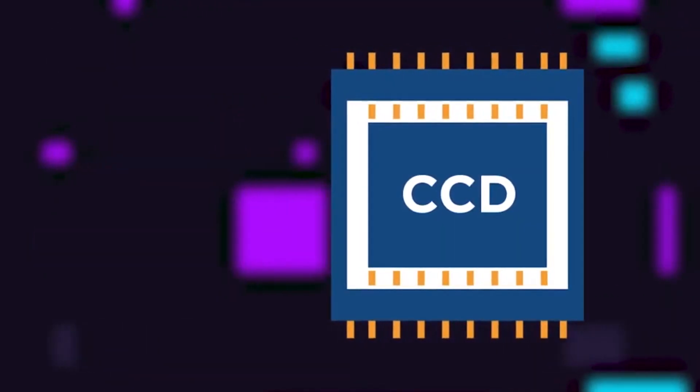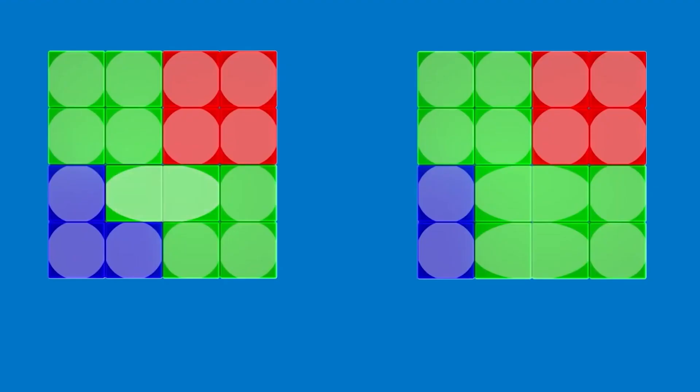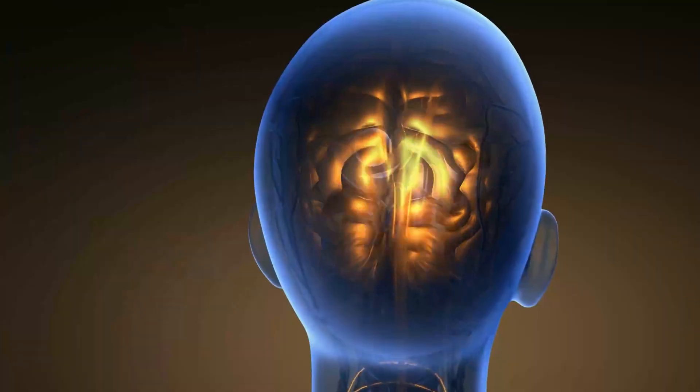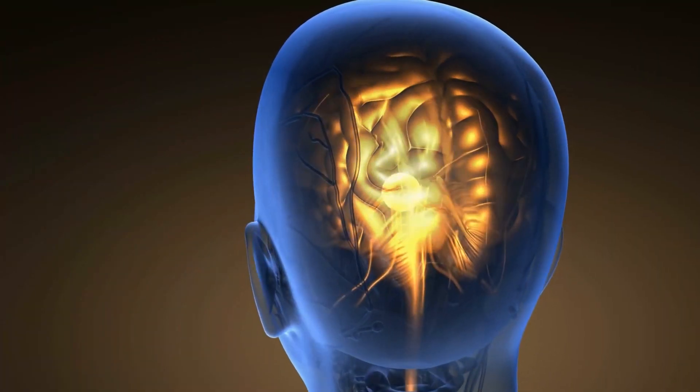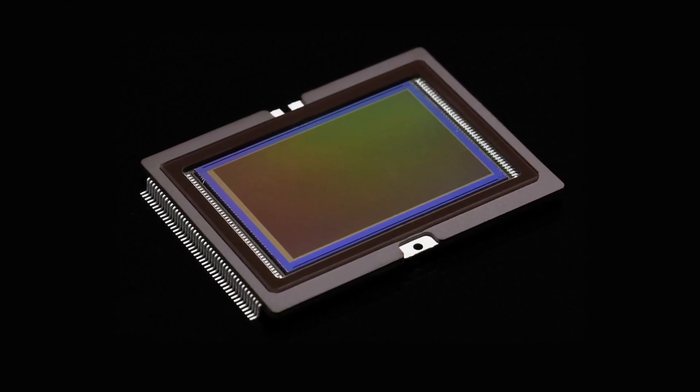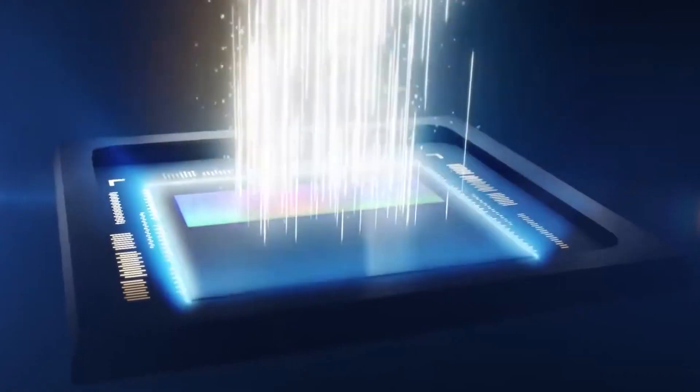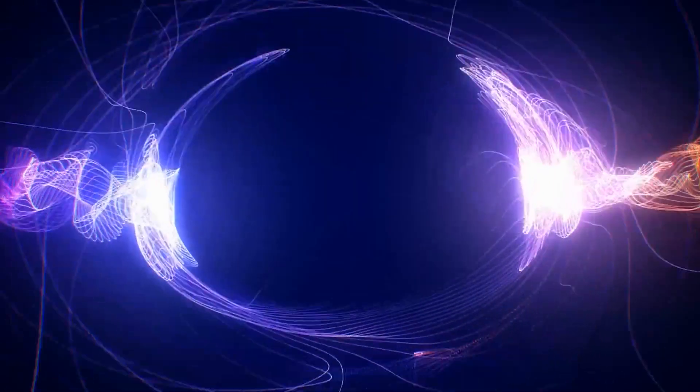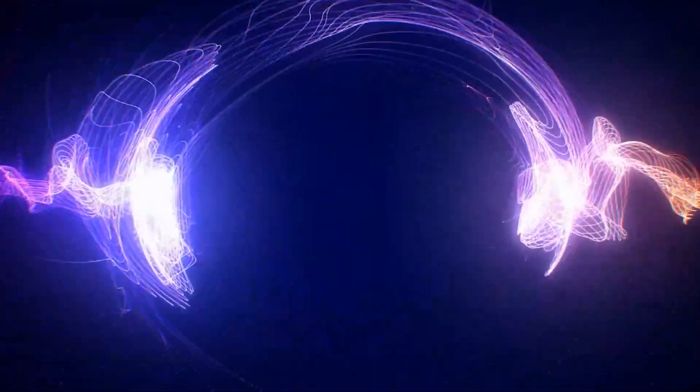In a CCD sensor, each pixel is like a tiny bucket that collects photons when light strikes it during exposure. The photons cause electrons to be released, which amass at the pixel, creating a charge that is constrained by electrodes and vertical clocks. After exposure, the electrons migrate down the rows of the CCD, and the charge from each pixel is gathered along the way.